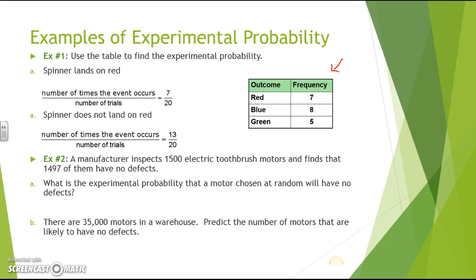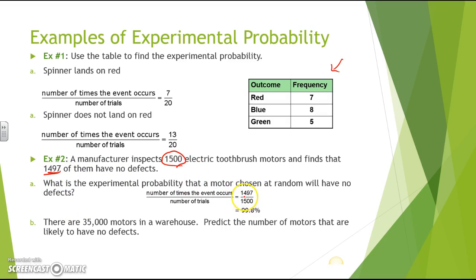Another example: a manufacturer inspects 1,500 electric toothbrush motors and finds 1,497 have no defects. To find the experimental probability that a randomly chosen motor has no defects, take 1,497 over 1,500, which gives about 99.8% of the motors have no defects.